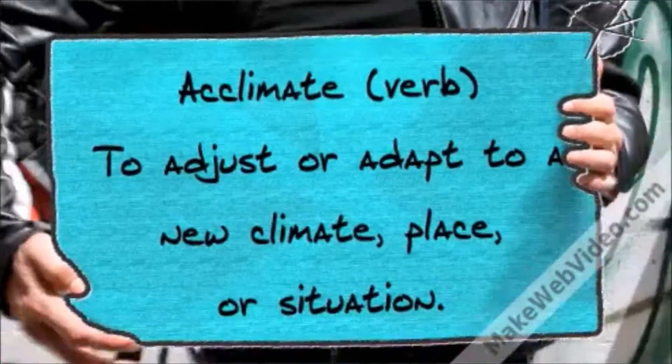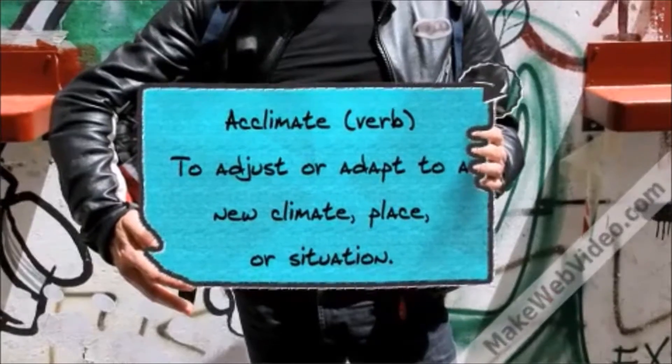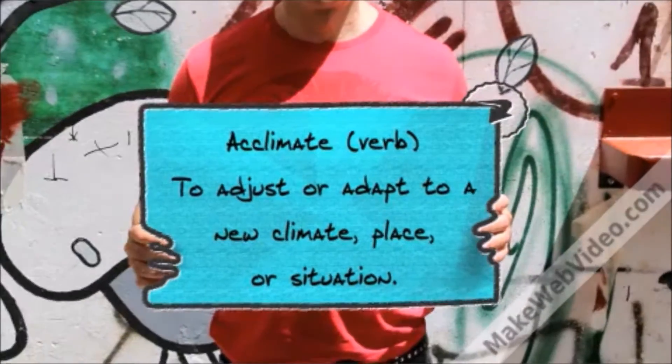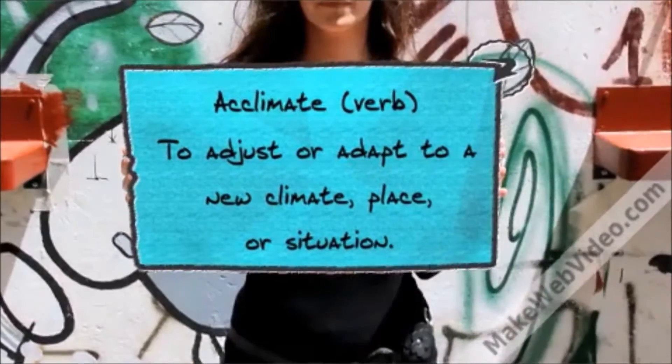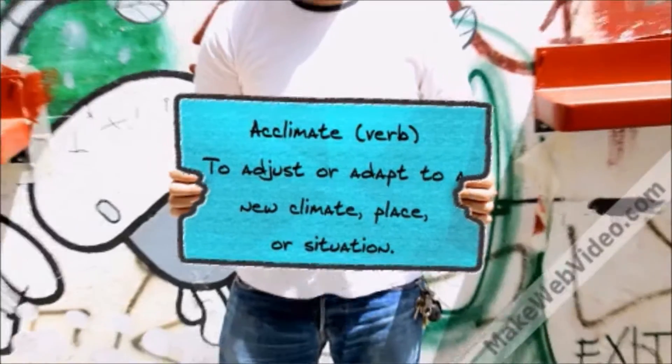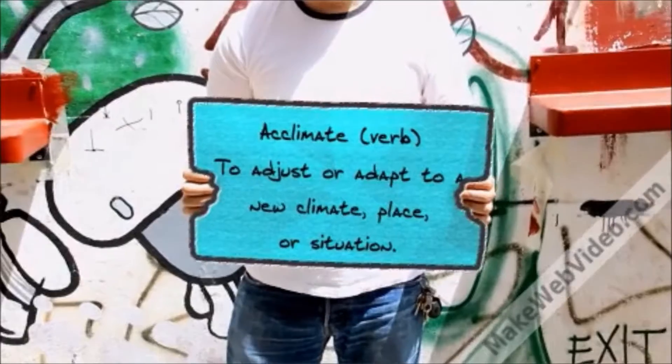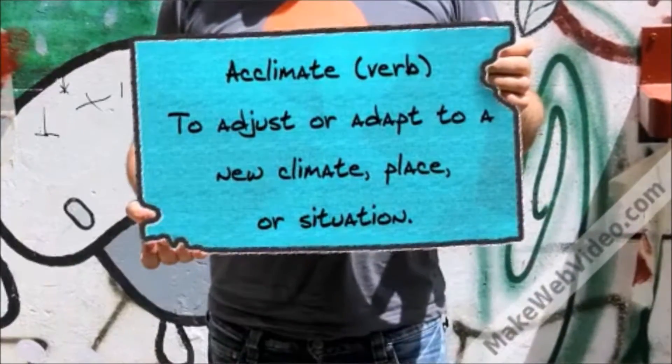Acclimate is a verb. Its dictionary definition is to adjust or adapt to a new climate, place, or situation.